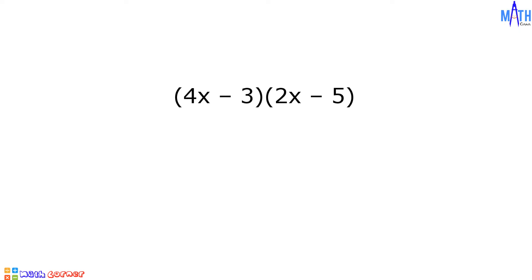Last example, example number three, we have 4X minus 3 times 2X minus 5. First terms, we have 4X times 2X. The answer is 8X squared. Outer terms, 4X times negative 5 is equal to negative 20X.